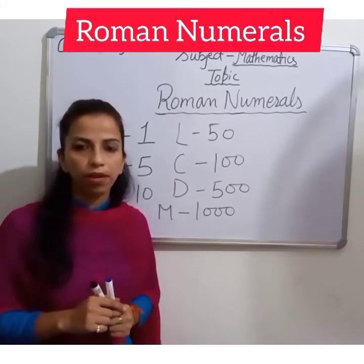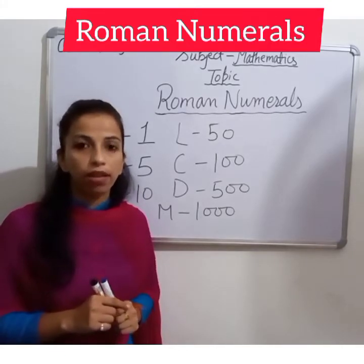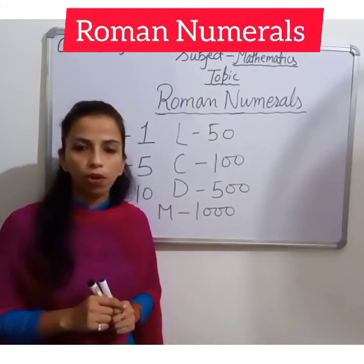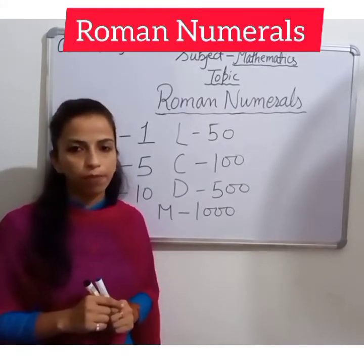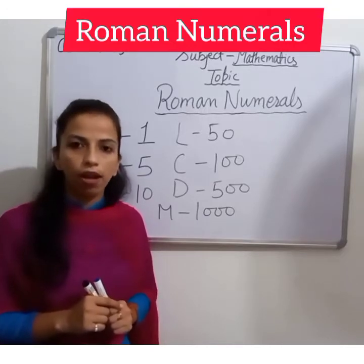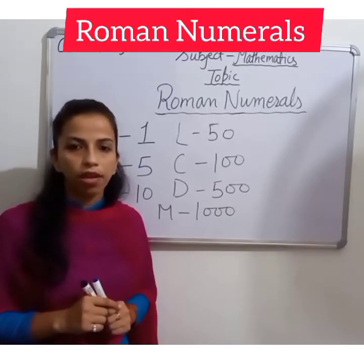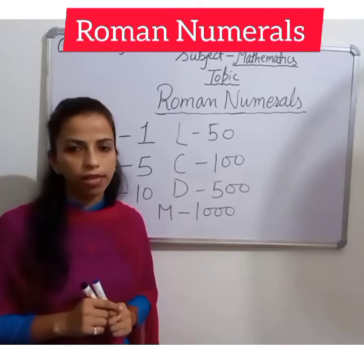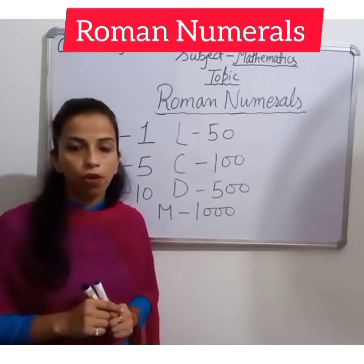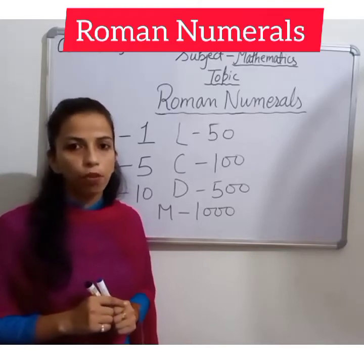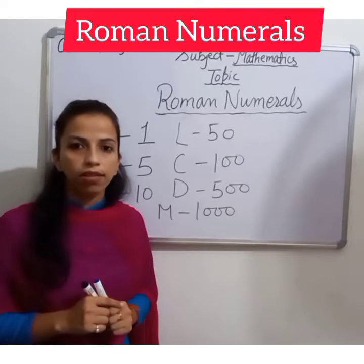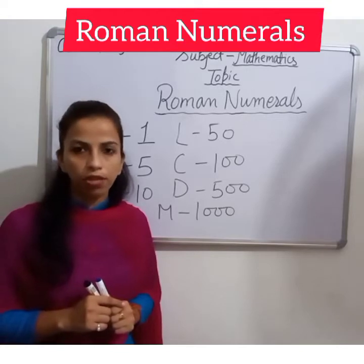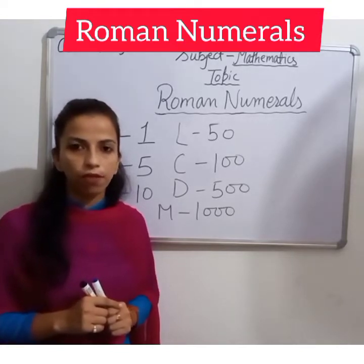So students, these are the seven English alphabets used to represent numbers in Roman numerals. There is no symbol for zero and there is no concept of a place value system. All the numbers are written by different combinations of these symbols.